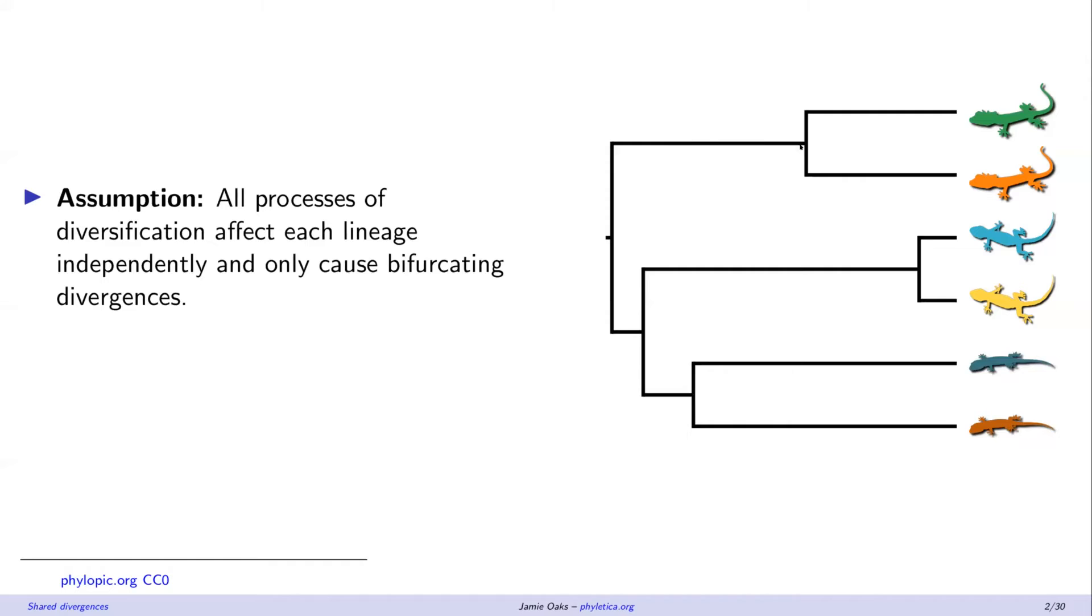So what do I mean by that? If we look at this ancestral lizard that was evolving, when it hits this magic moment when it diverged, whatever process caused it to diverge only leads to two daughter species and has no effect on any other lineages across the tree. So that's an assumption we're making.